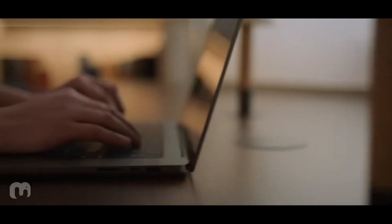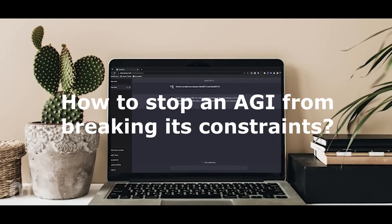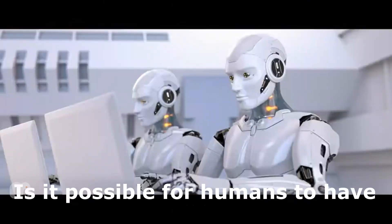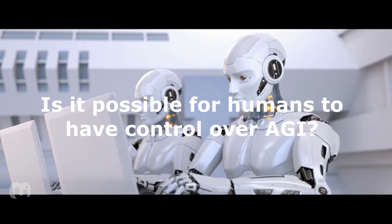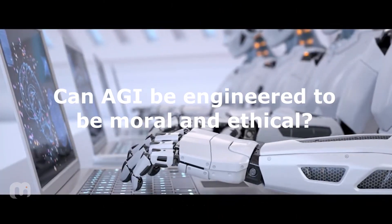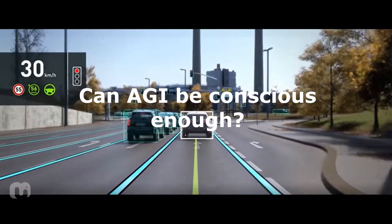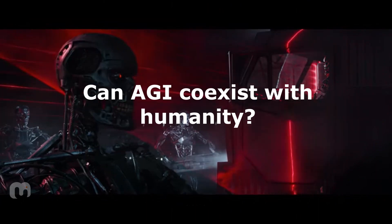But here are a few important questions that need to be answered even before we think about designing such a system. How to stop an AGI from breaking its constraints? Is it possible for humans to have control over AGI? Can AGI be engineered to be moral and ethical? Can AGI be conscious enough? Can AGI co-exist with humanity?